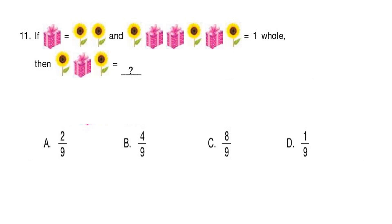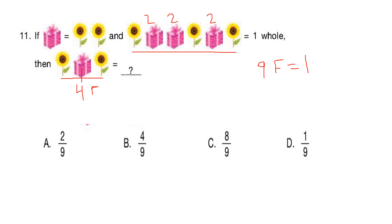Question number 11. If 1 gift box equals 2 flowers and these total equals 1 whole, then 2 flowers and 1 gift box equals what? We write 1 gift box equals 2 flowers, so the items shown are 2, 2, and 2 flowers. Counting all flowers: total 9 flowers makes 1 whole. The question has 2 flowers plus 1 gift box, which equals 4 flowers. So, 4 flowers equals 4 by 9. Answer is Option B.